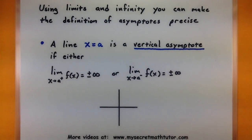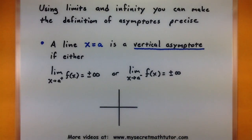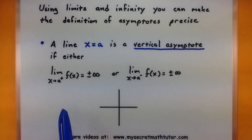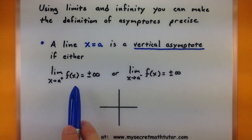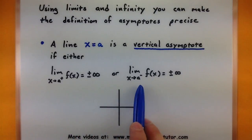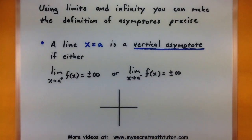Now if you use limits involving infinity like this, you actually have a more precise definition of asymptotes. In case you've never heard of what an asymptote is, we'll explain them briefly using these limits. A line x equals A is a vertical asymptote if either the limit as x approaches A from the right is positive or negative infinity, or the limit as x approaches A from the left is positive or negative infinity.